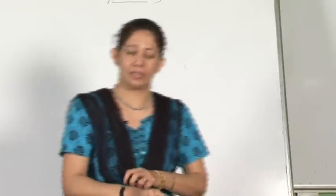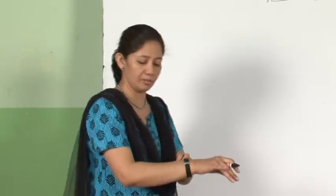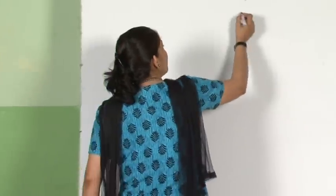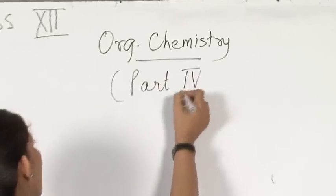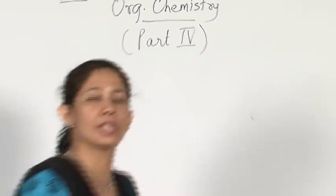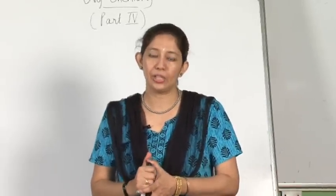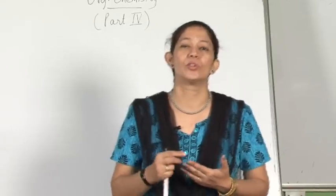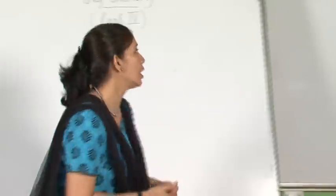In Part 2 I started with organic reactions — addition reactions. I did oxidation and reduction. I am now coming to Part 4, where I am going to conclude organic chemistry with the important points. I have already covered addition reactions, elimination reactions, dehydration, ozonolysis, oxidation, and reduction.